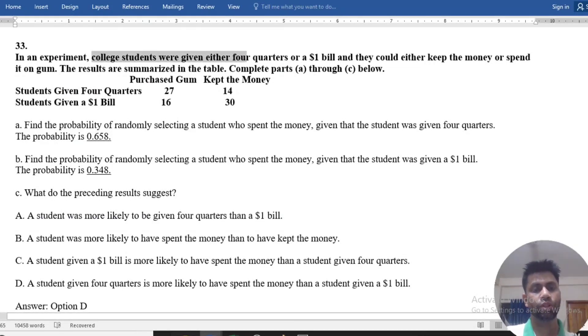In an experiment, college students were given either four quarters or one dollar bills. Here is given the table. The probability of randomly selecting a student who spent the money, given that the student was given four quarters.